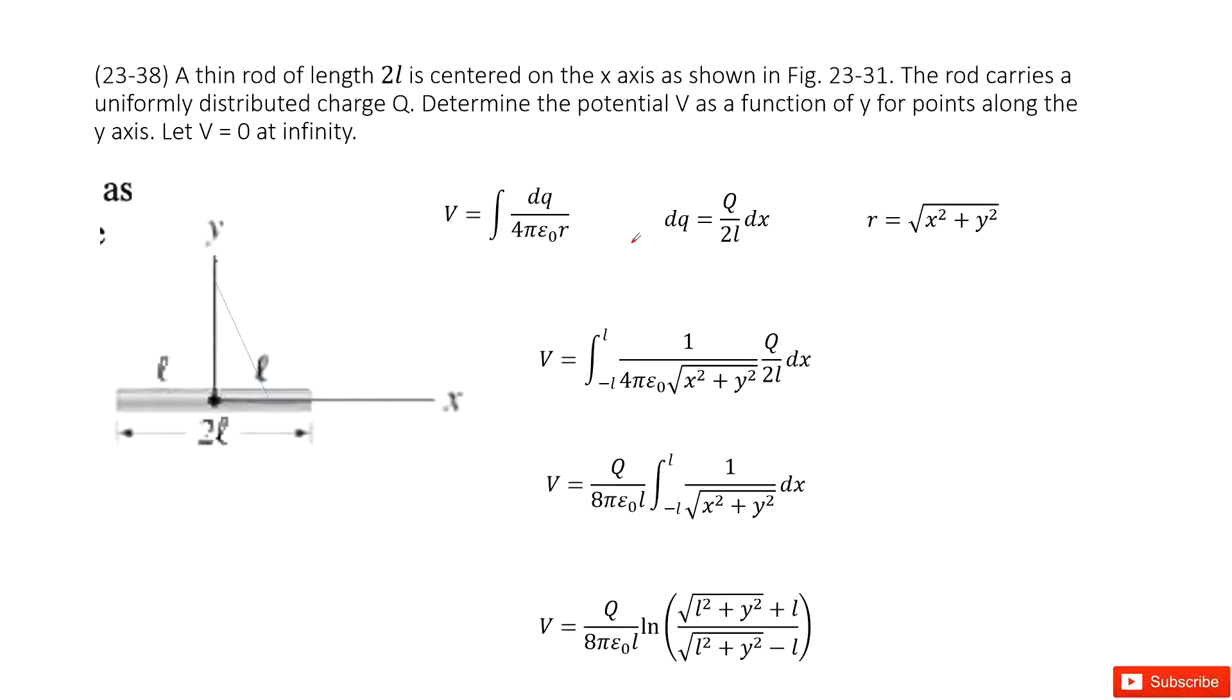Chapter 23 is about electric potential. We can see in this system, we have a very thin rod. The length is 2l, and then as the center, we consider it as the origin center, with x-axis and y-axis.